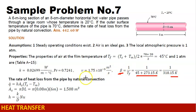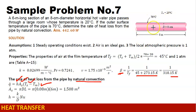The rate of heat loss from the pipe by natural convection is solved using the convection formula: Q equals the convection coefficient H times the surface area times the difference between the surface temperature and the fluid temperature. For the surface area, we use the lateral surface area of a cylinder, which is π times diameter times length, giving us 1.508 meters squared.